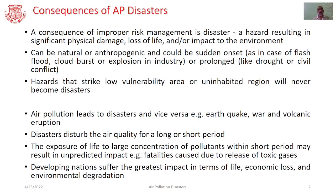Let's try to understand about the consequences of air pollution disasters. In general, we can say that disaster is a consequence of improper risk management. It is a particular hazard which results in significant physical damage as well as loss of life and hazardous impact on the environment. This disaster could be natural or it could be man-made, and also it may be sudden onset, say for example a flash flood, cloudburst or an explosion in industry. Or it could also be prolonged onset, say for example drought or sudden after effect of civil conflict.